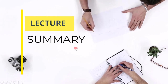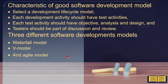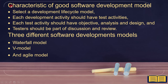Let's summarize the important points. First, we saw the characteristics of a good software development model: select a development lifecycle model; each development activity should have test activities; each test activity should have objectives, analysis, and design; and testers should be part of discussion and review. After that, we covered three different software development models: the Waterfall model, the V-Model, and the Agile model.